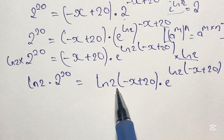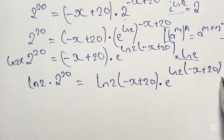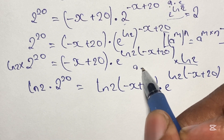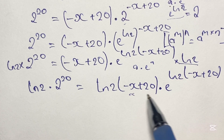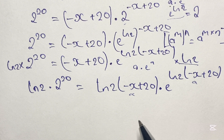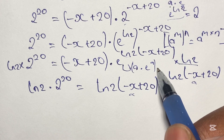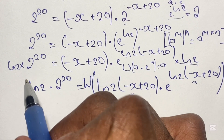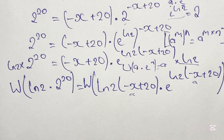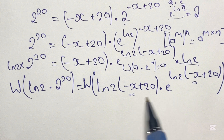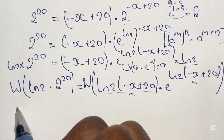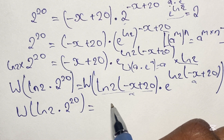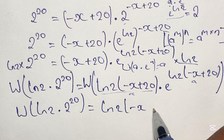So what are we looking at? We have ln 2 times negative x plus 20 in the base, and in the power we also have ln 2 times negative x plus 20, with e in the middle. Referring back to our expression, we actually have a times e to the power of a, where ln 2 times negative x plus 20 is a. And applying the W function to this expression, the result is a. So we apply the W function to both sides of this equation. So we have W of ln 2 times 2 to the power of 20, and this is equal to ln 2 times negative x plus 20.